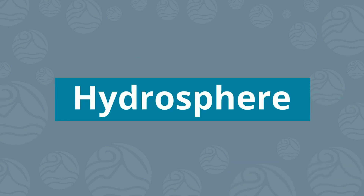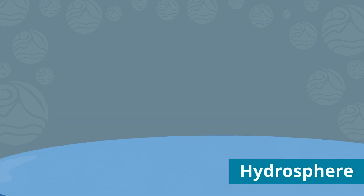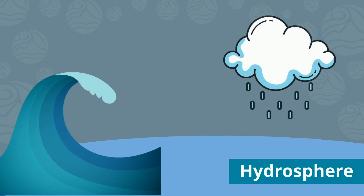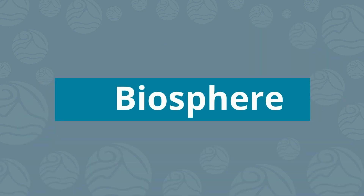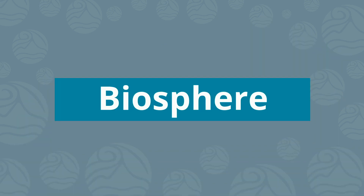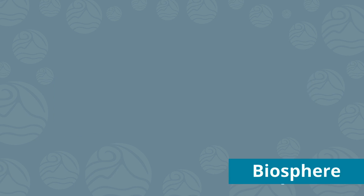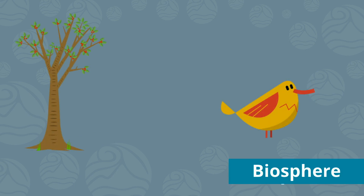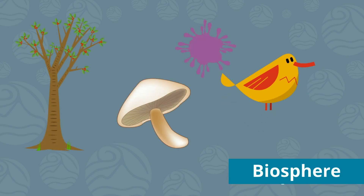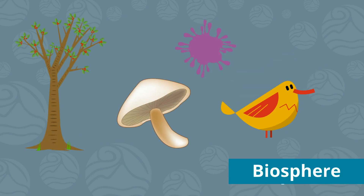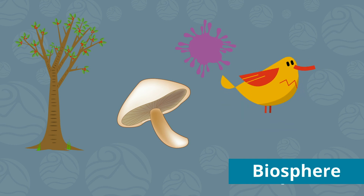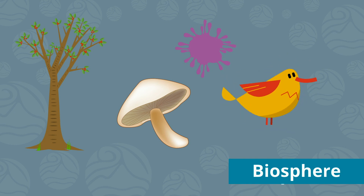The water system is called the hydrosphere. It includes all the salty and freshwater across the globe and how it all moves through the water cycle. The biosphere is made up of all life on earth. It includes plants, animals, fungi, bacteria, and all the interactions between them like symbiosis and predation.